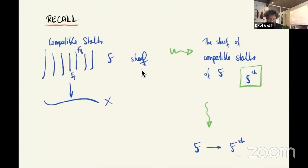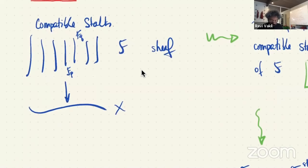Let me remind you of things we talked about last time. We have the notion of compatible stalks, and this is going to be the notion of the espace étalé. If you have a space X with a sheaf on it, you have compatible stalks: above P you put the stalk at P, and above Q you put the stalk at Q.